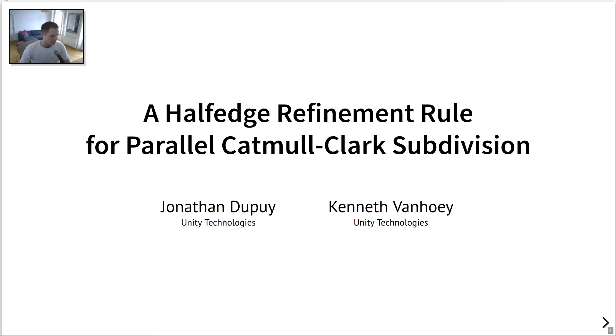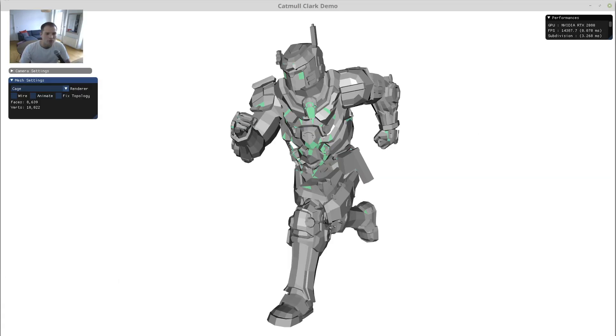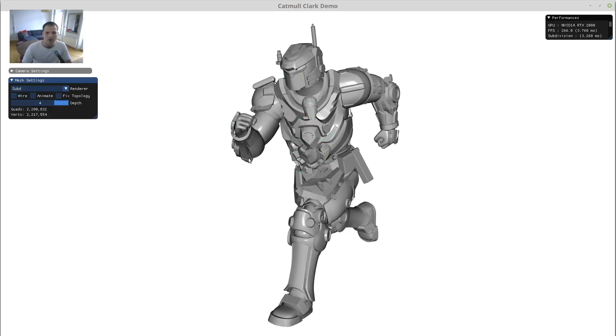So to start things off, I'd like to briefly explain what Catmull-Clark subdivision is and what it's useful for. It's essentially an algorithm that takes as input a control cage, a low-poly mesh such as this one. And given this control cage, it produces a smooth surface which is visualized here.